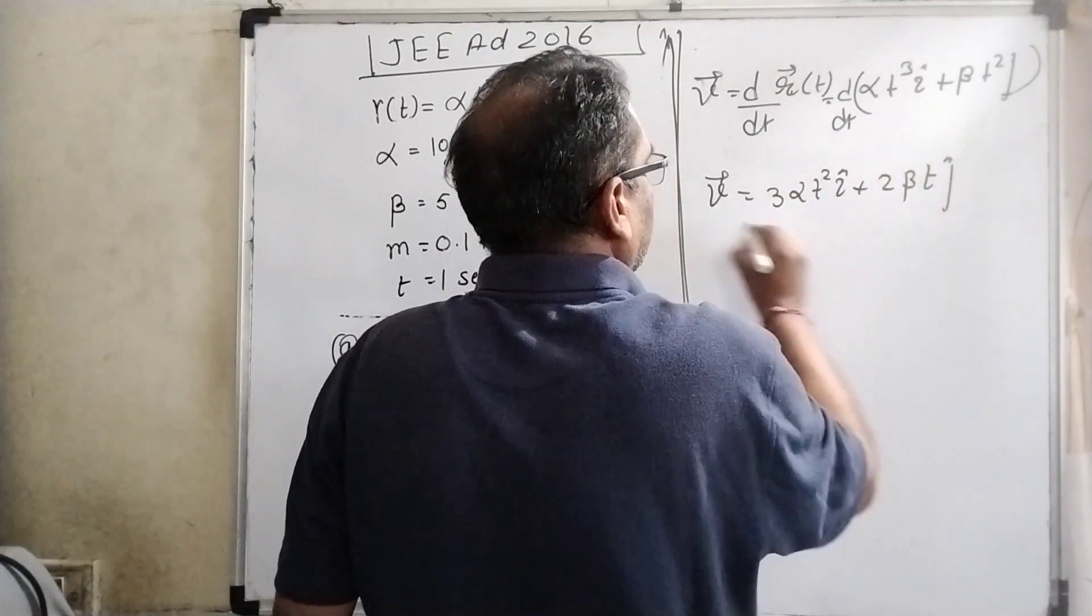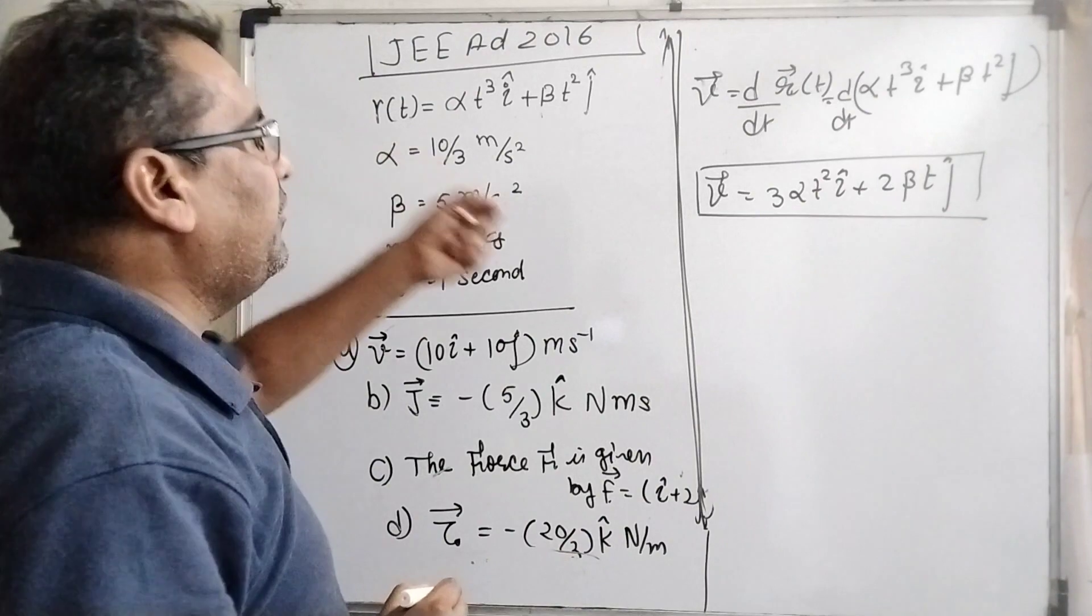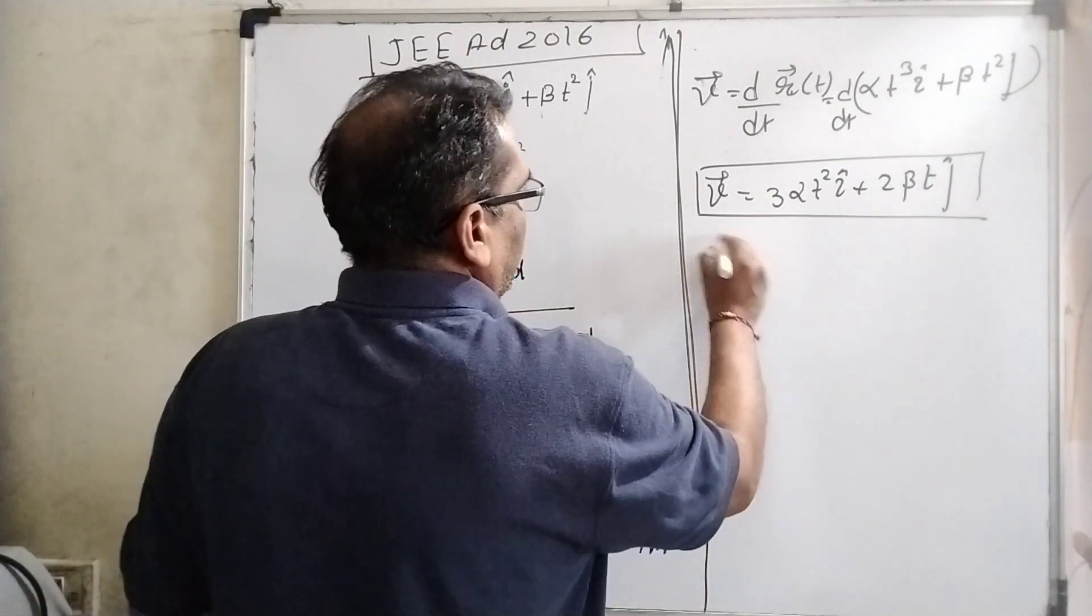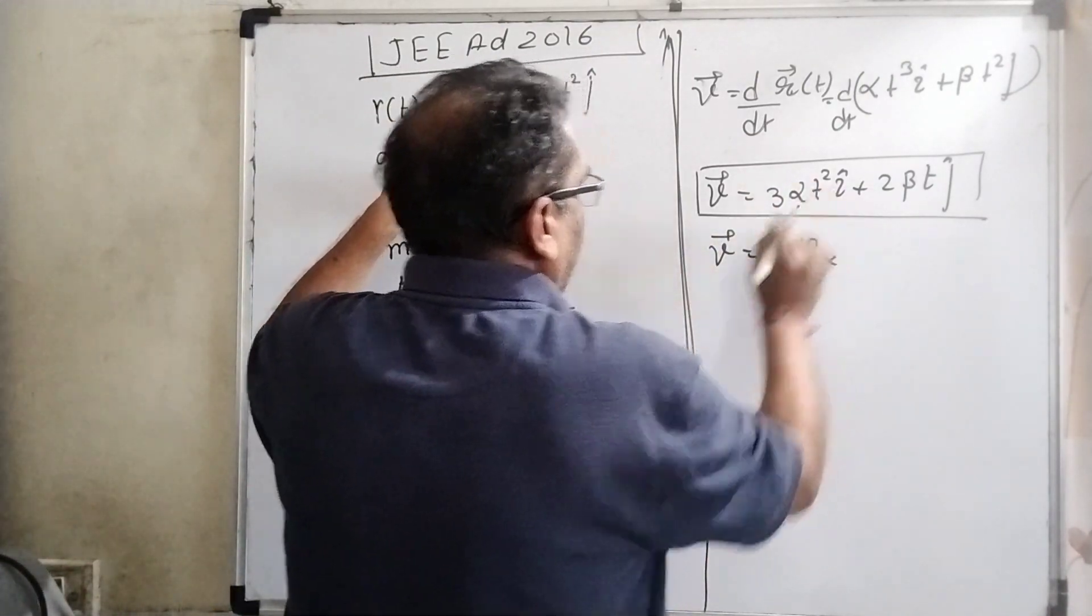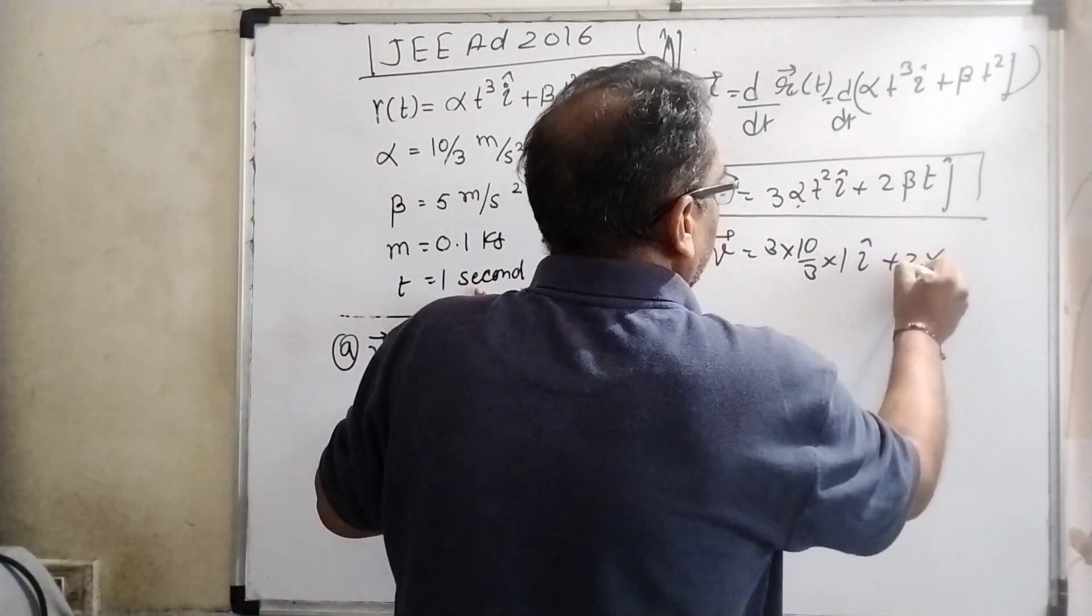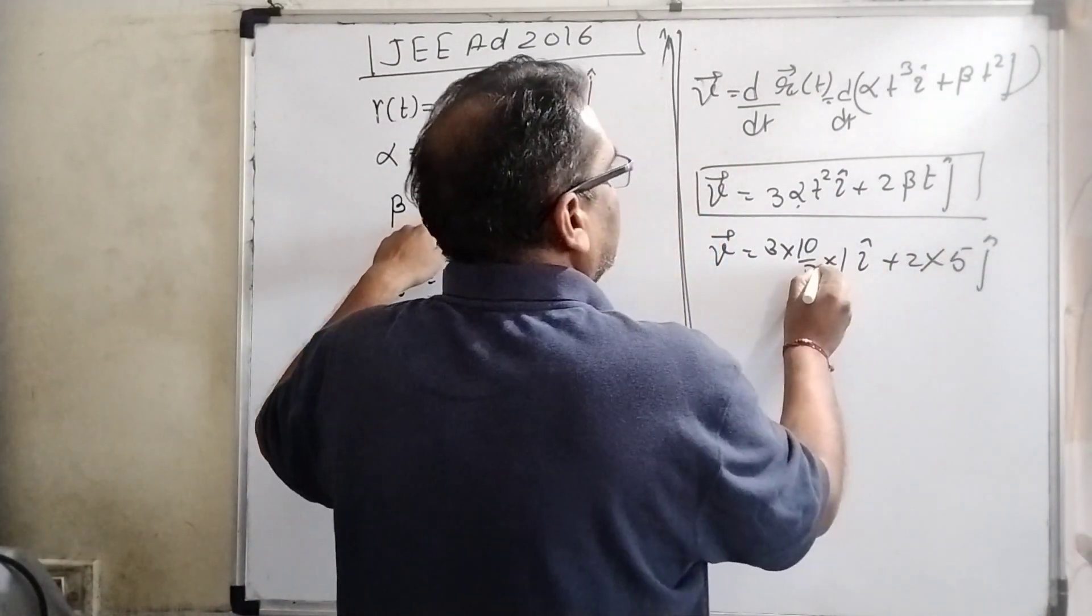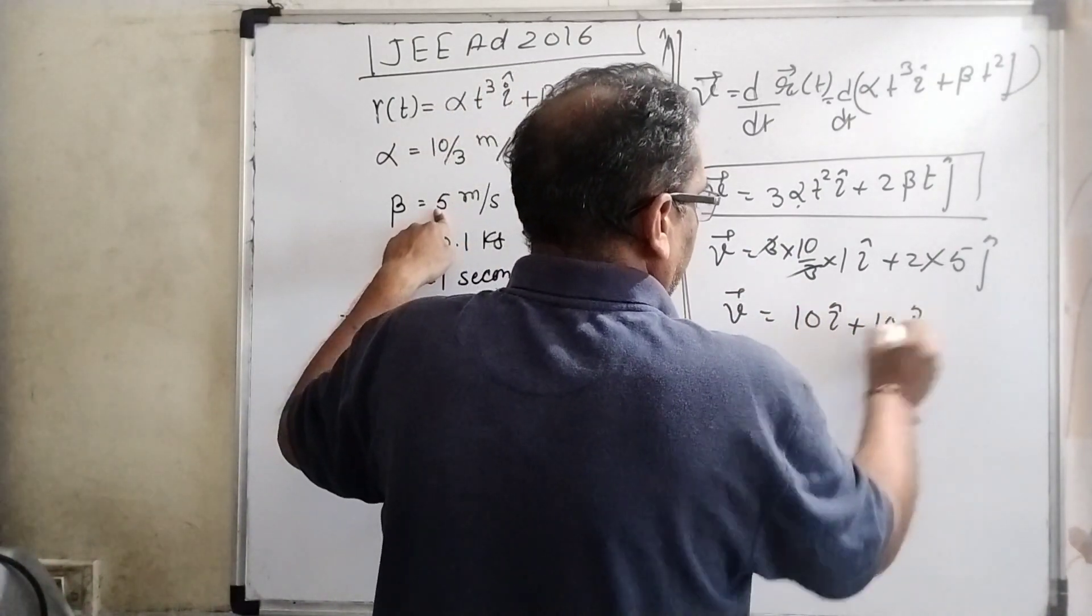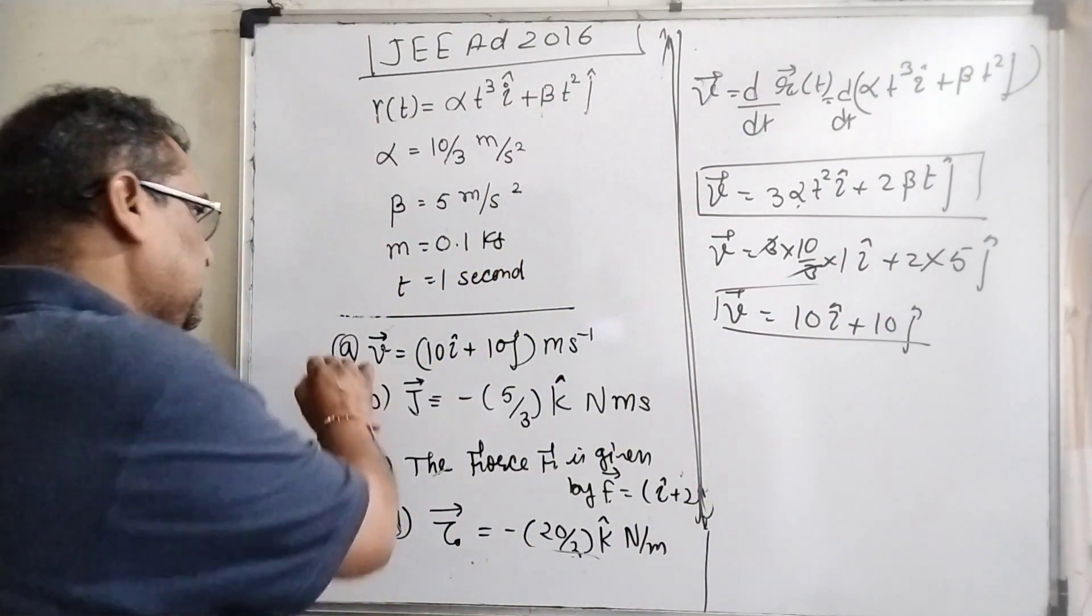Now substitute the values of α, β, and t. What is α? 10/3. What is t? 1 second. And 2β, what is β? 5. So we get 10i + 10j. Now you can check the first option: 10i + 10j. Yes, it is correct.